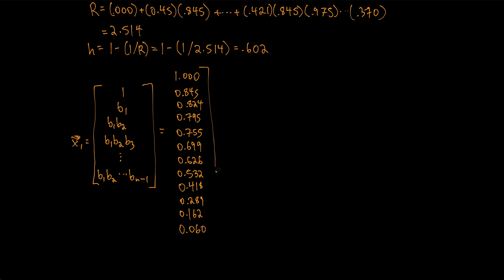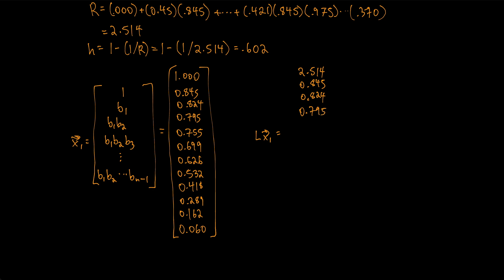Multiplying the Leslie matrix L by x1 gives: 2.514, 0.845, 0.824, 0.795, 0.755, 0.699, 0.622, 0.532, 0.418, 0.289, 0.162, and 0.060.